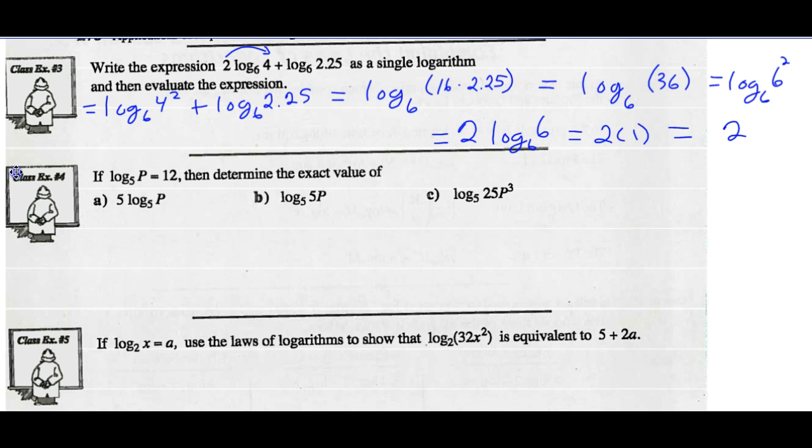Example 4, if the log of P base 5 is 12, determine the exact value of the following. A common error that people make here is they want to write this in exponential form and say 5 to the 12th equals P, which is correct. But that's a very large number and it's hard to work with. Let's just leave this as it is and see what happens if we do that. A says 5 times the log of P base 5. Well, we're told the log of P base 5 equals 12. So this is like saying 5 times 12. So 5 times 12 is 60.